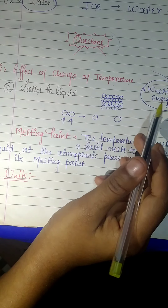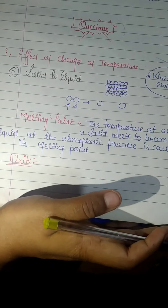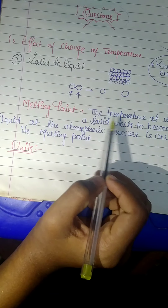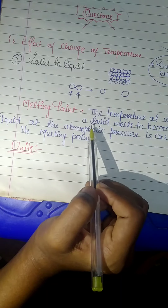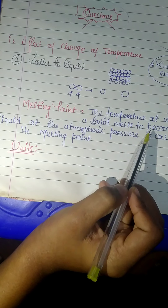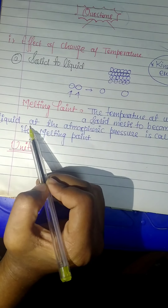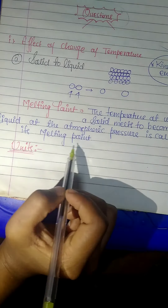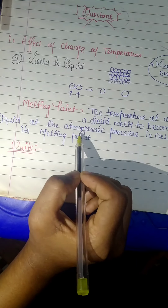Now let's talk about melting point. The temperature at which a solid melts to become a liquid at atmospheric pressure is called the melting point.